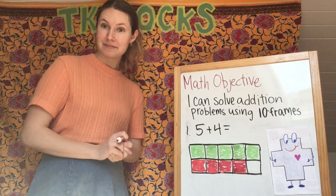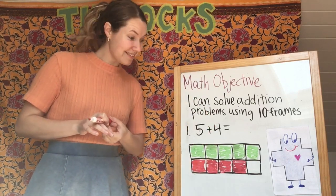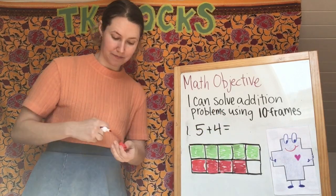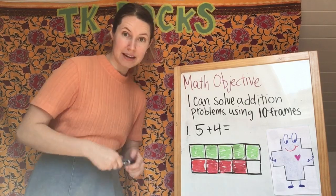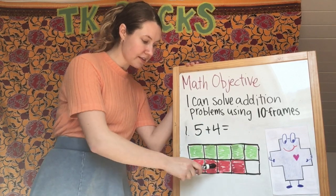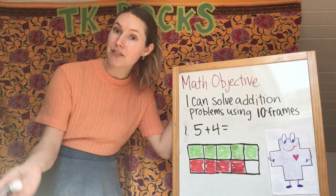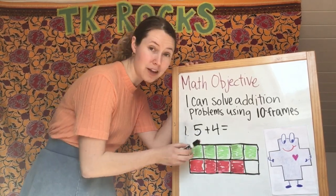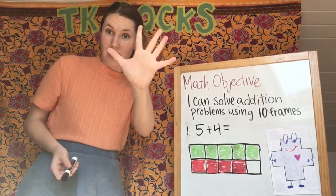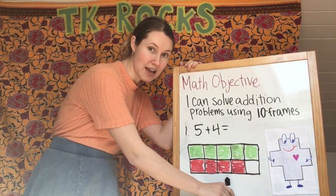Am I done now? No, I'm not done. What do I have to do? I have to count them all up to figure out how many I have all together. So I'm going to go ahead and count: one, two, three, four, five, six, seven, eight, nine. Now there's another way I could have counted. What I could have done is remember that this was five — I colored all the top row, which is five. So I could have started at five and then counted from here: six, seven, eight, nine.